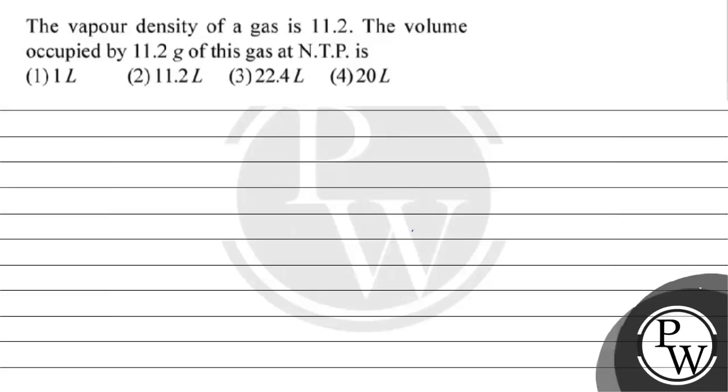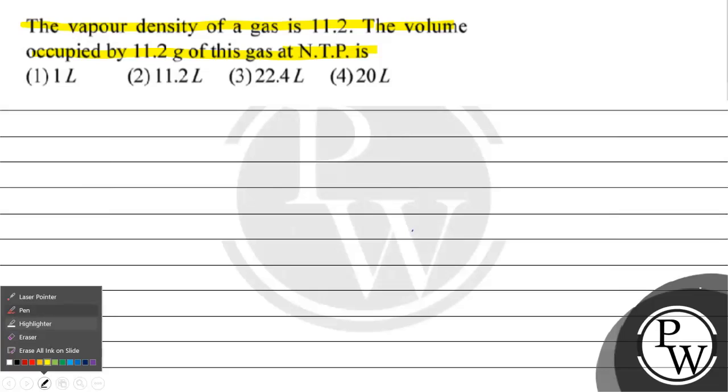Hello guys, let's read this question. The question says the vapor density of a gas is 11.2. The volume occupied by 11.2 gram of this gas at NTP is: option 1 is 1 liter, option 2 is 11.2 liter, option 3 is 22.4 liter, option 4 is 20 liters.